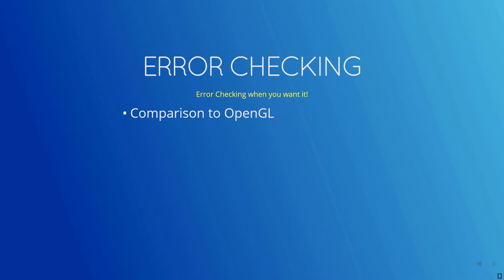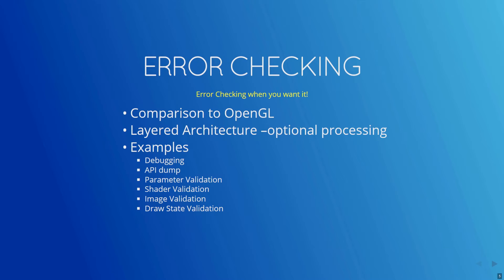In Vulkan, error checking is optional. The Vulkan architecture is layered, so you'll only load an optional validation and debug layer when you need to — like during development and not in a shipping version. This layered architecture will allow for great innovation, as device vendors and other third parties will be able to provide extensions and common tools which can plug into the common Vulkan framework. More tools at your disposal when you need them, and an easy way to remove them when you don't.